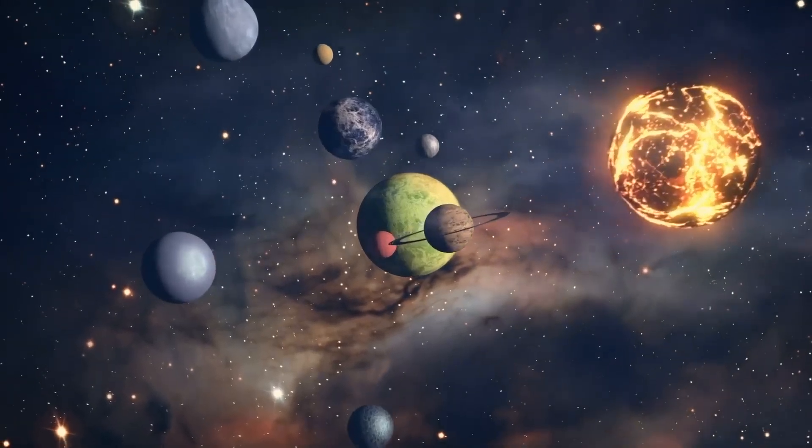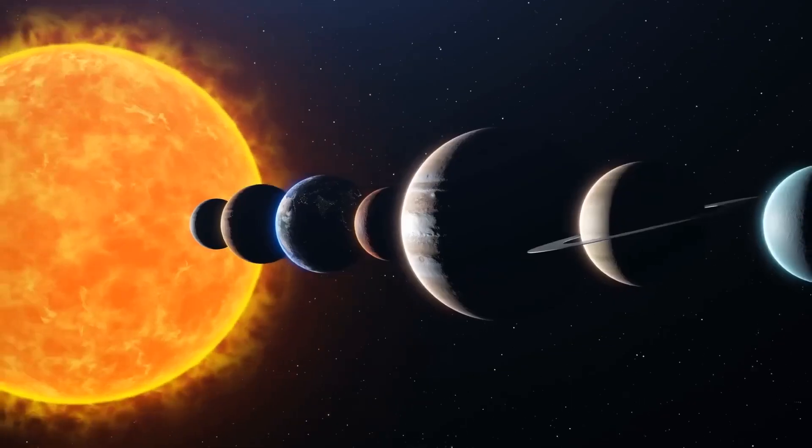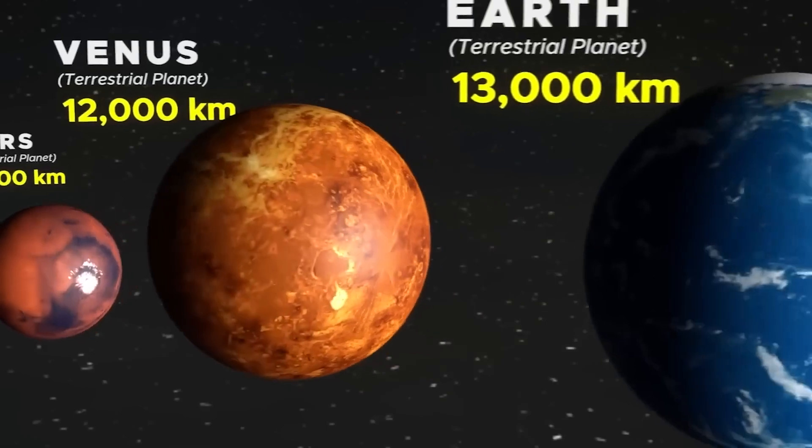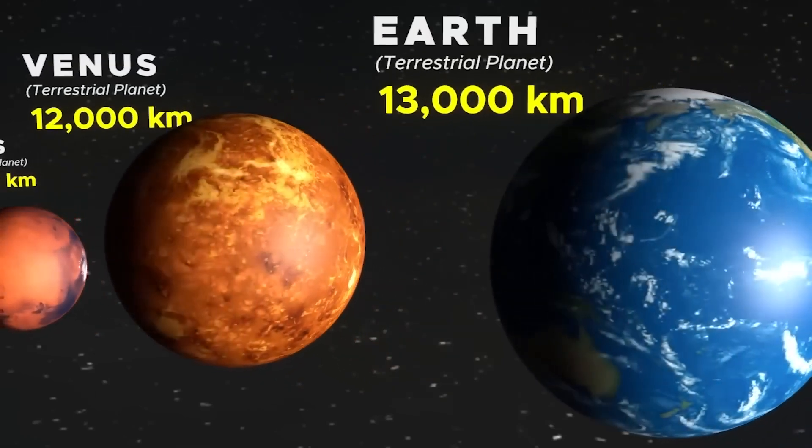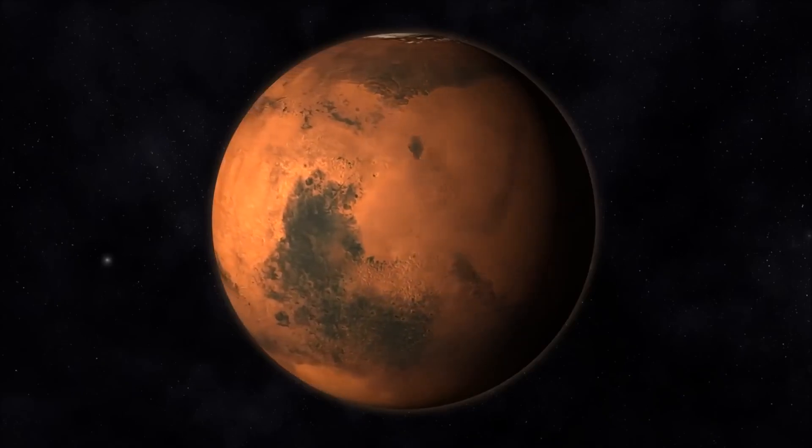Moving outward from the sun, we encounter the planets of our solar system. The closest planet to the sun is Mercury, located at an average distance of about 58 million kilometers. Venus follows at an average distance of approximately 108 million kilometers from the sun.